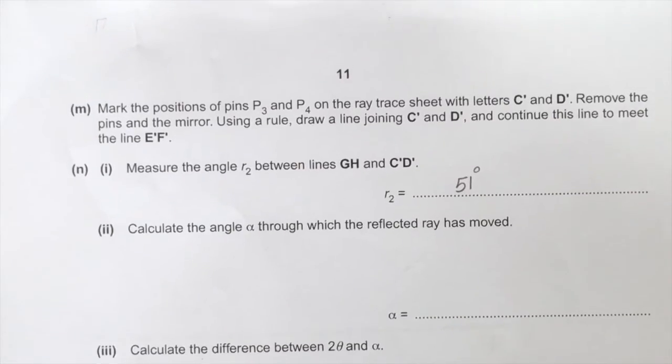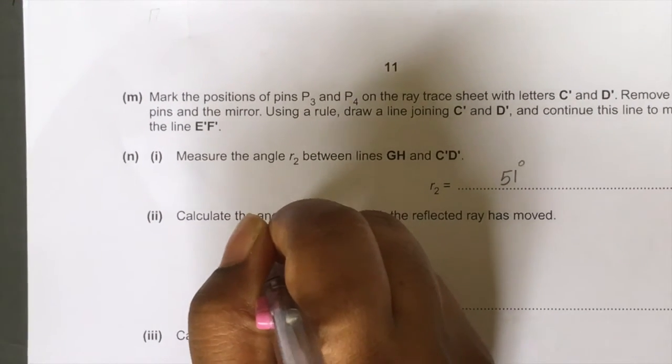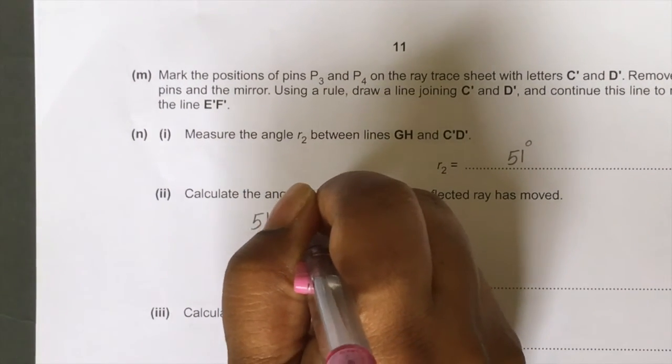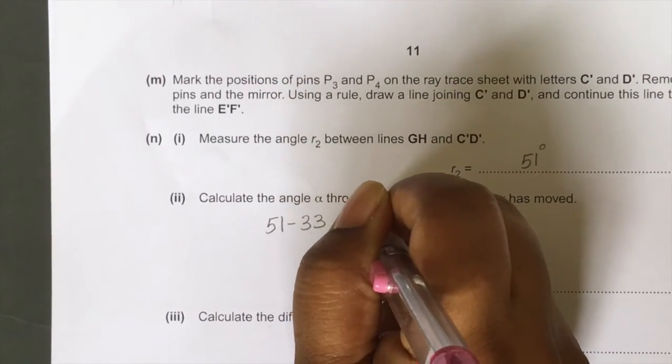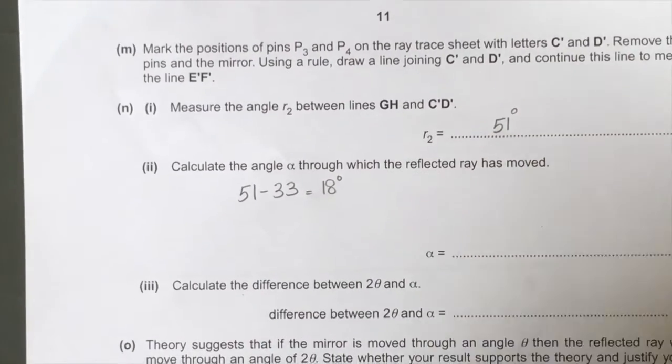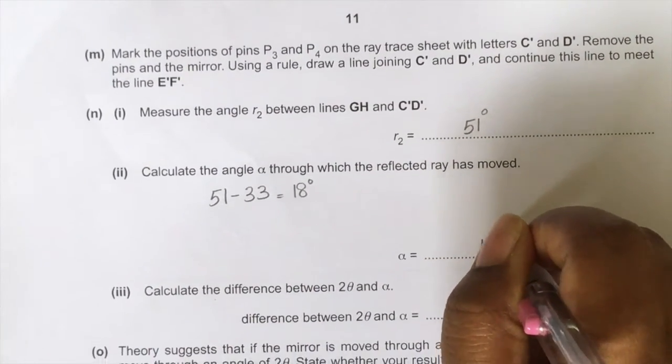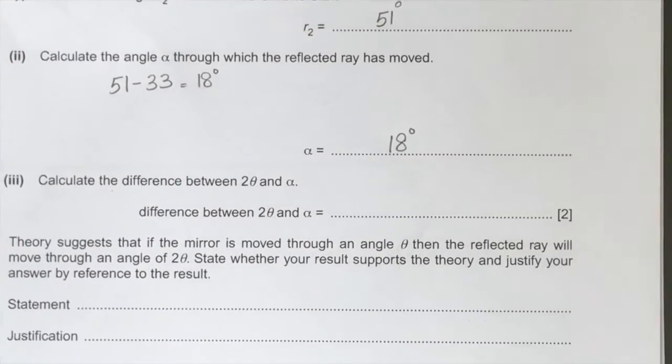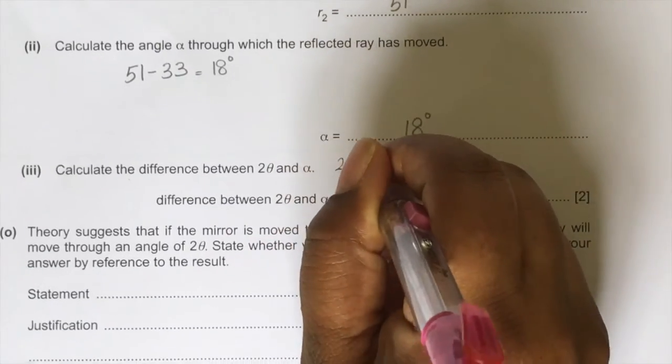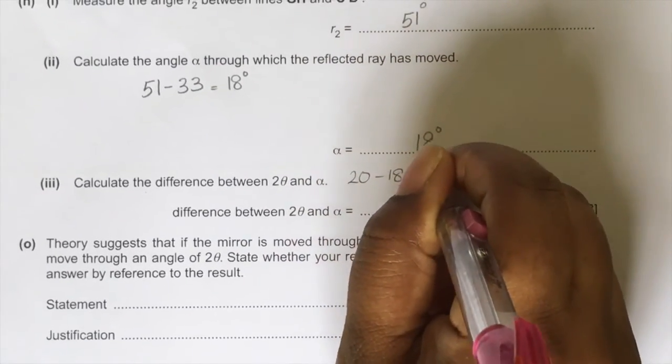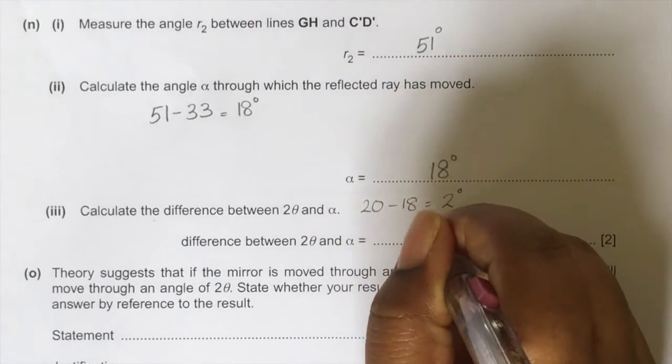Next, calculate the angle alpha through which the reflected ray has moved. This is R2 minus R1. In our experiment we got R2 51 degree and R1 33 degree. So the difference will be 18. Next step is to calculate the difference between 2 theta and alpha, which is 20 minus 18, which gives us 2 degree. This completes the observation part.